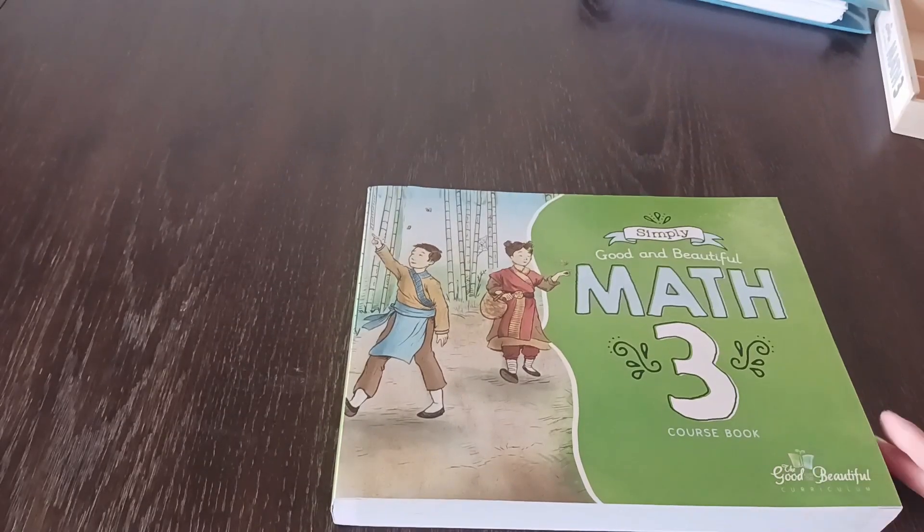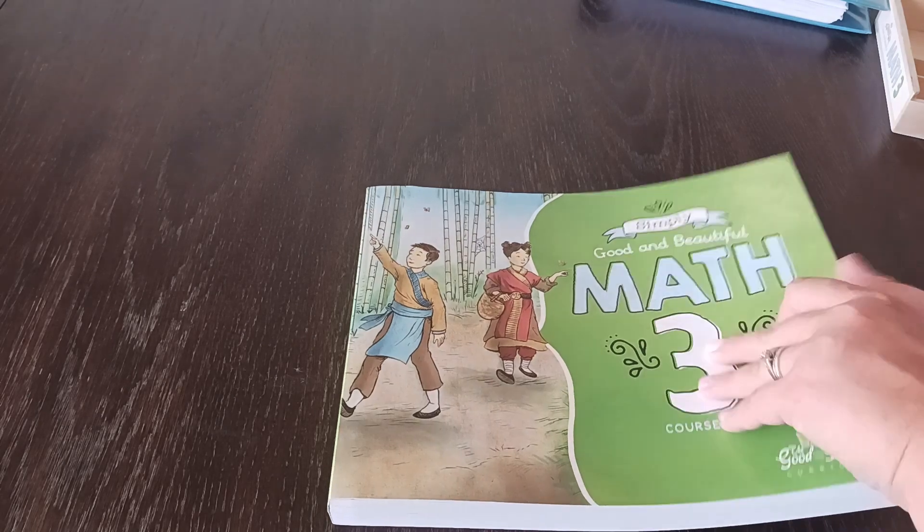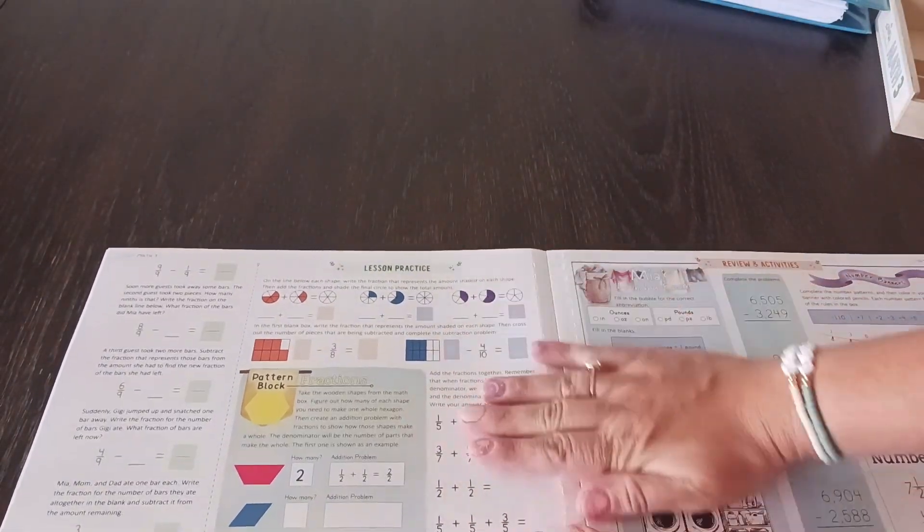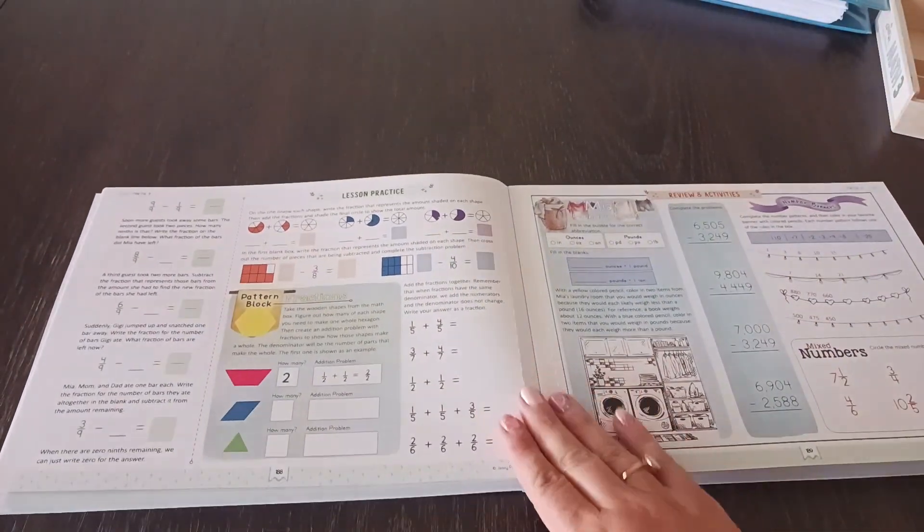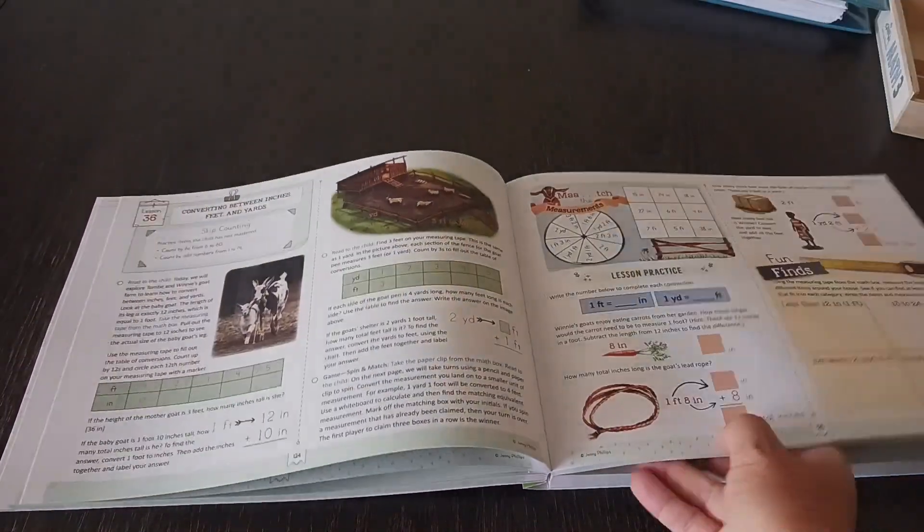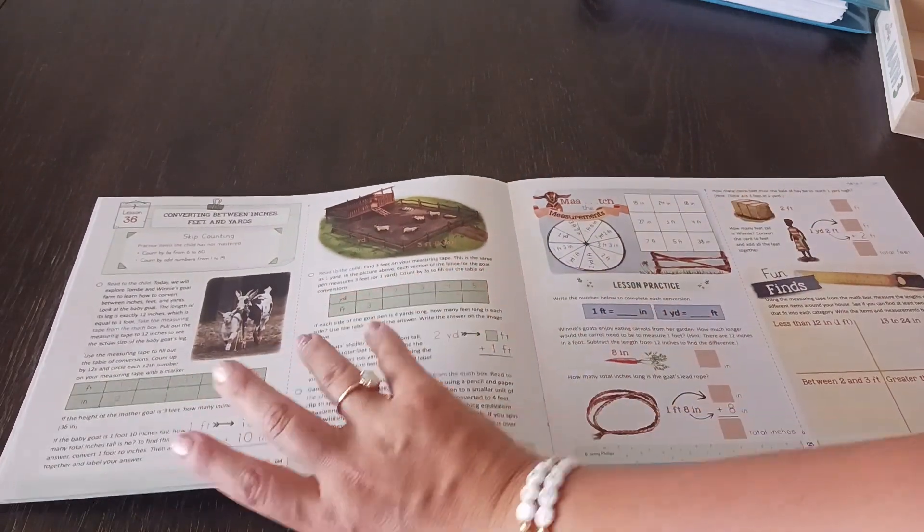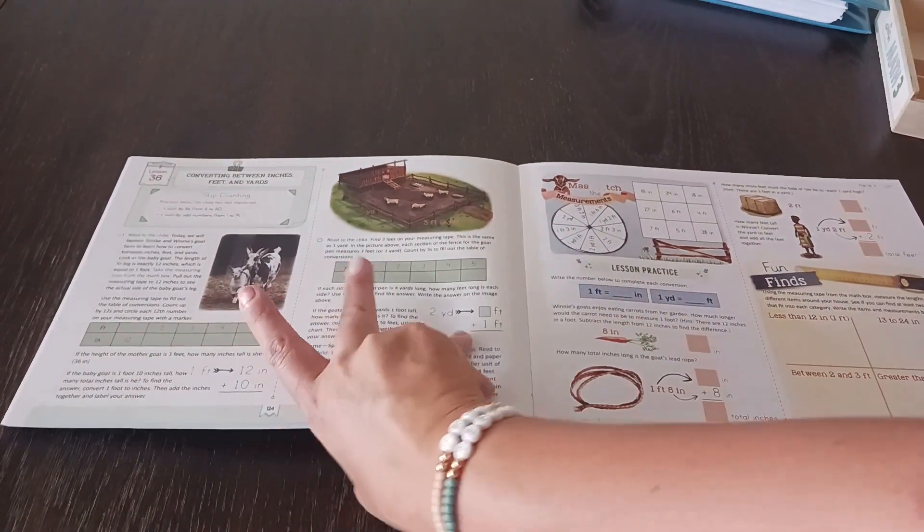Okay, so the course book. So this book, this will be my second time using this because Addison used this last year. So what you want to do when you first get this book, you want to go to about the middle of the book and you're going to lay it completely flat like this because the binding on it is a little bit different. But once you do that, anytime you go to it, it'll start just laying flat and it'll be easier the more you use it. But I actually really do like the binding on this.